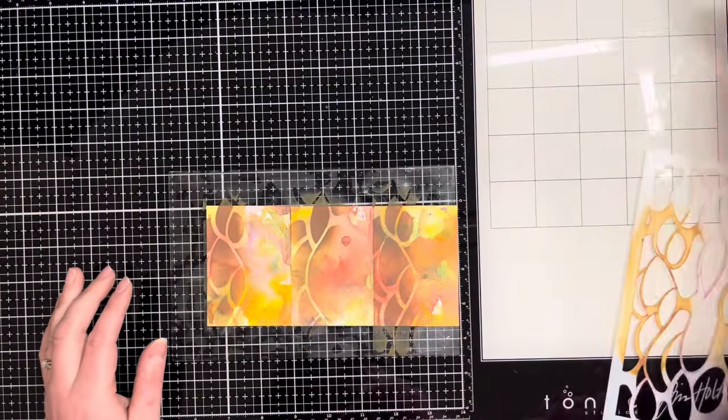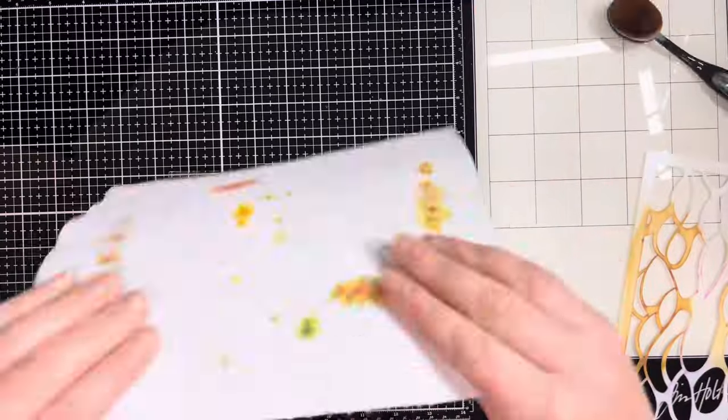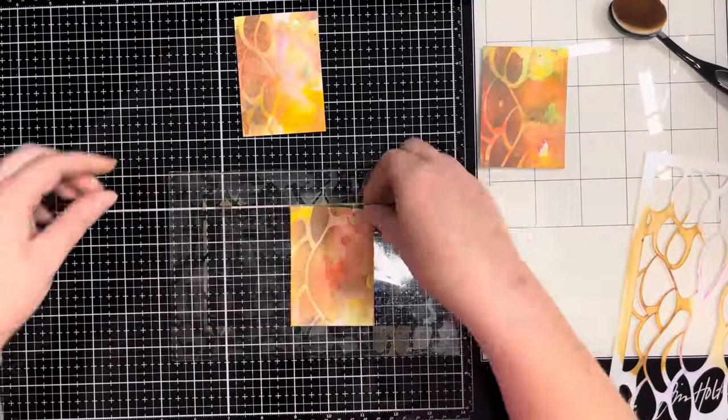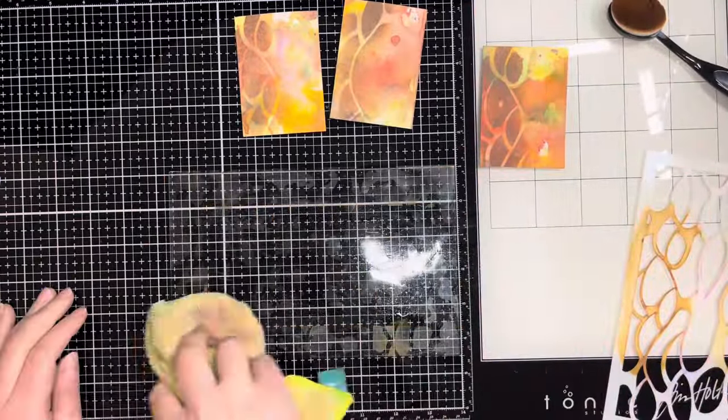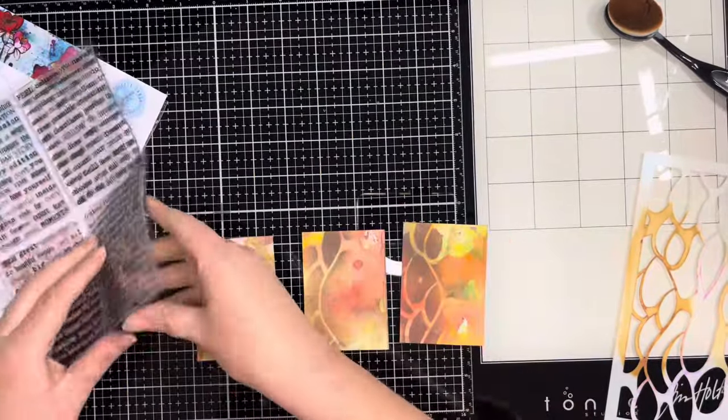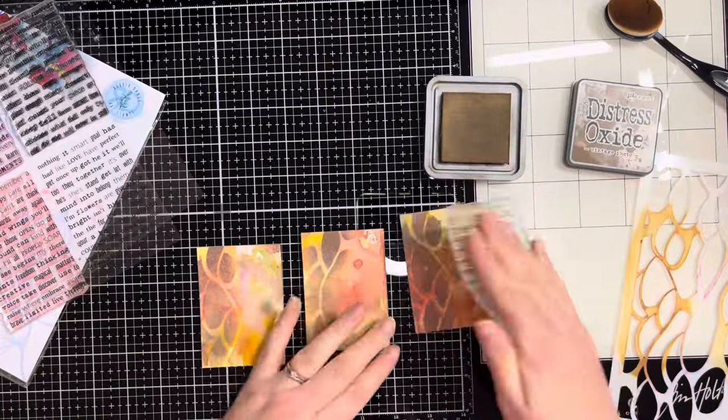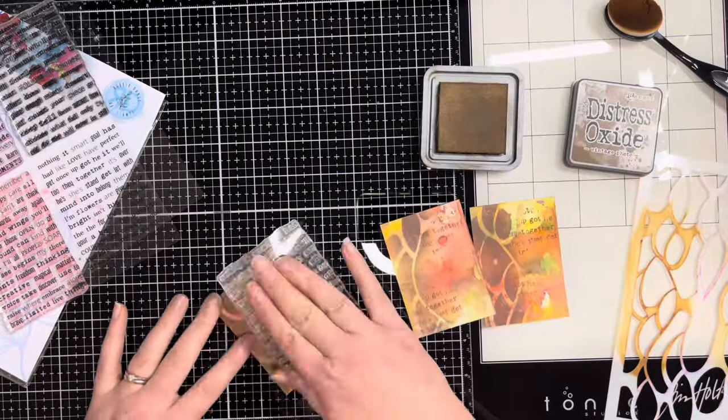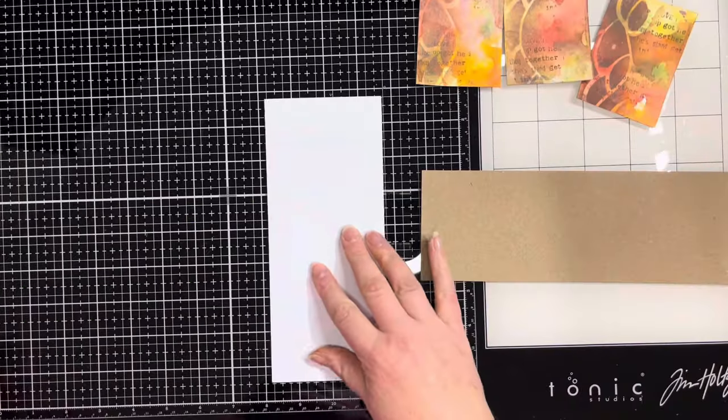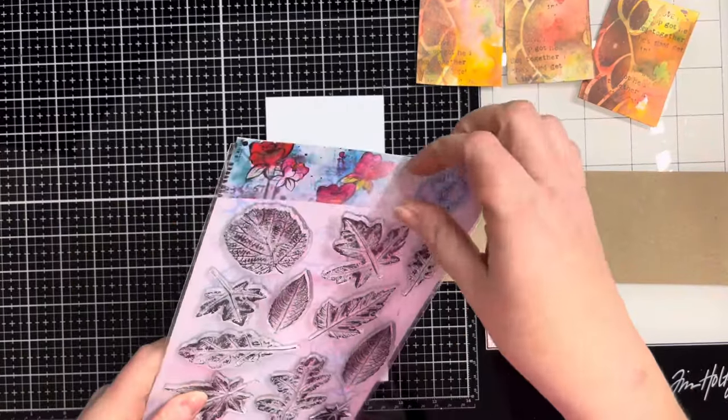I've come in with some Vintage Photo Distress Oxide and once I've added stenciling to the left side of each card I spritz it with water and wipe off my grip mat. I've got the Mixer Sentiments stamp set and I'm adding background stamping also using the Vintage Photo. This just adds a little bit of interest to the ATCs. I like to add text in the background, I think it's really effective.